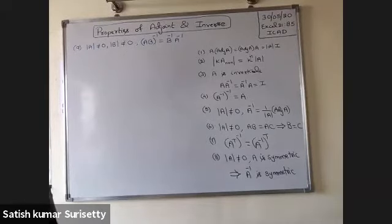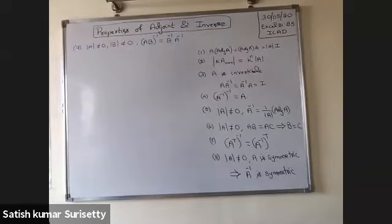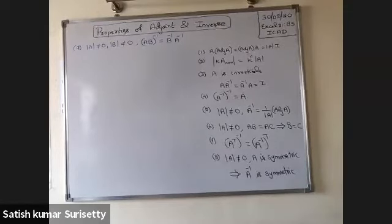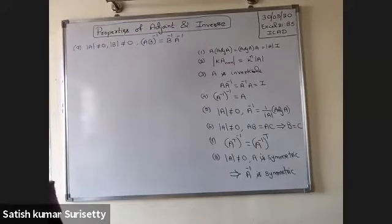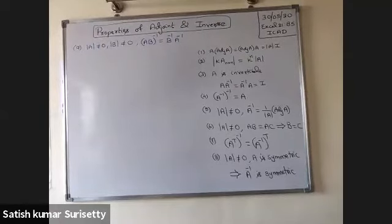A inverse whole inverse equals A. If determinant of A is not equal to zero, that is A is non-singular, then A inverse equals one upon determinant of A into adjoint of A. If A is non-singular, then AB equals AC implies B equals C — that is, the cancellation property holds true only for a non-singular matrix.